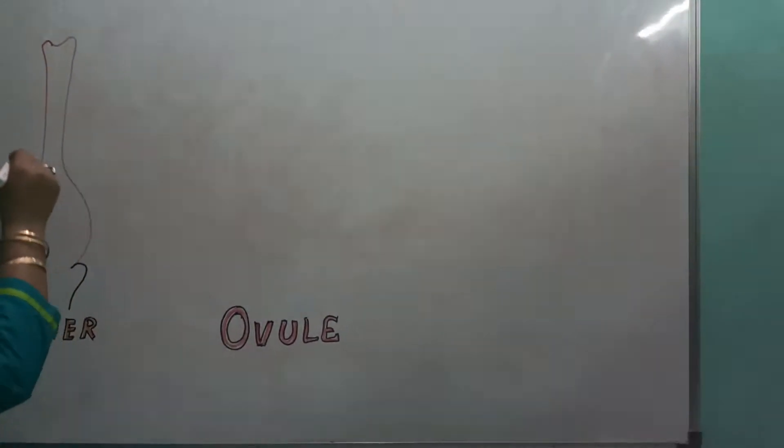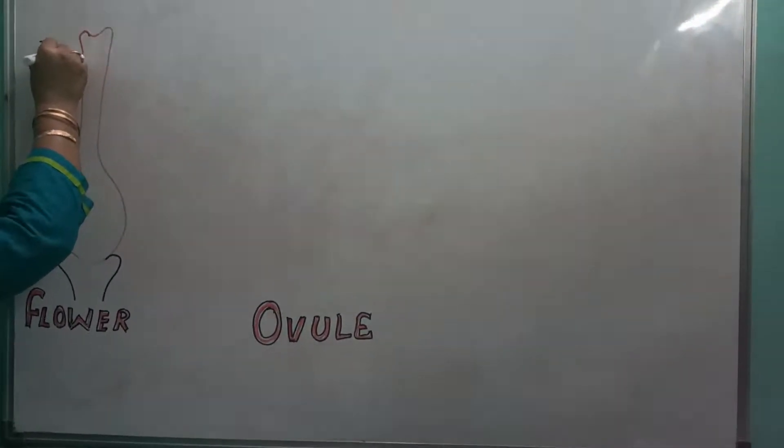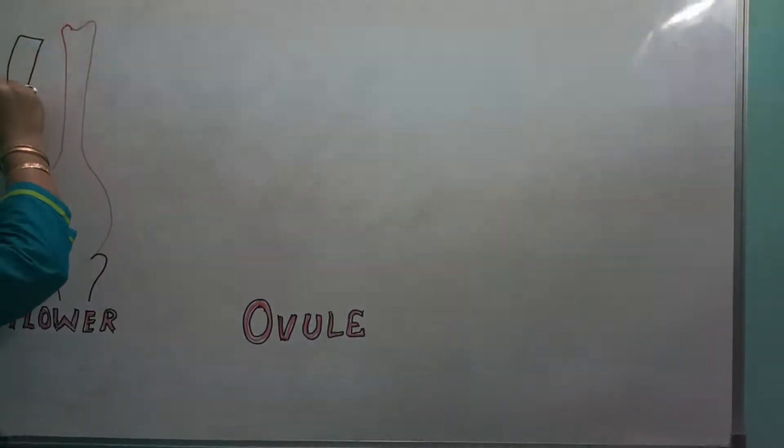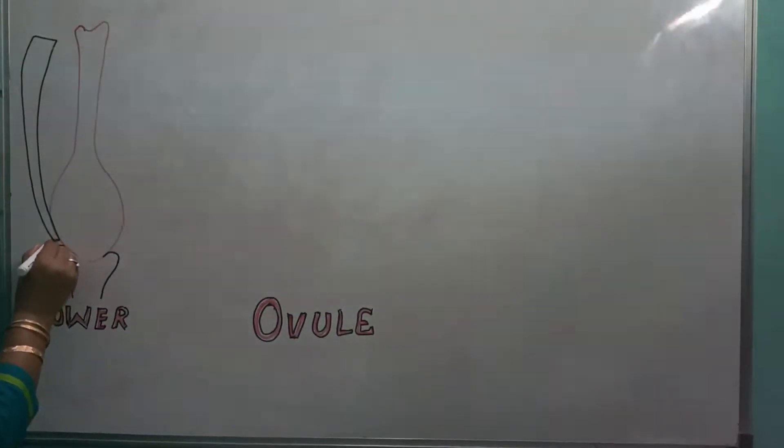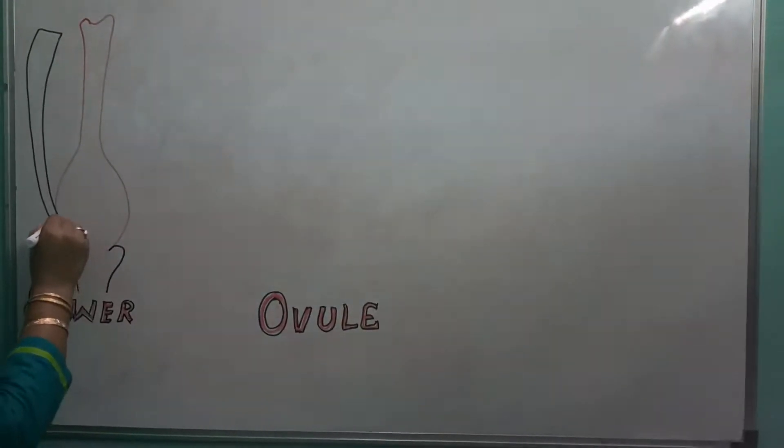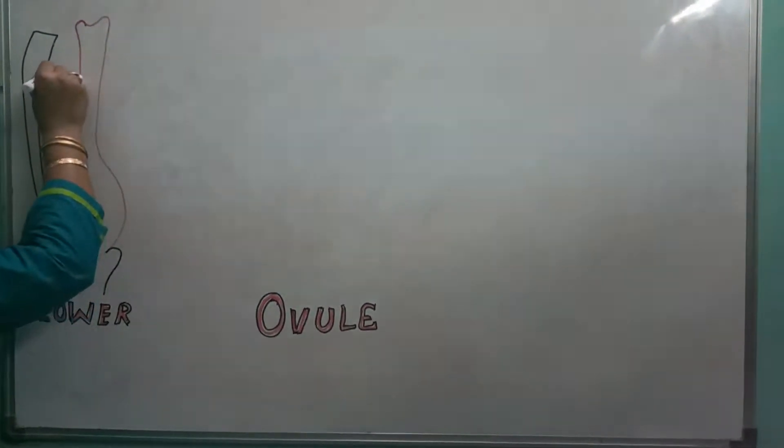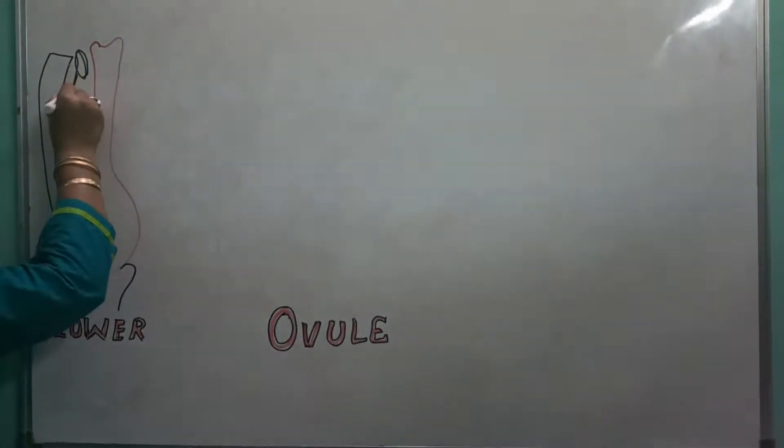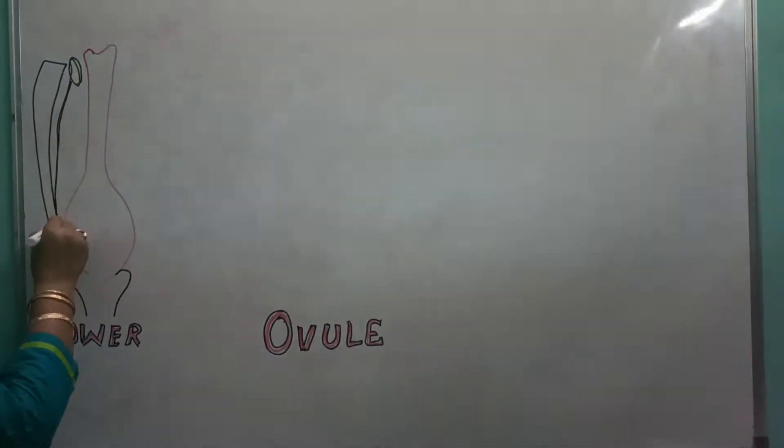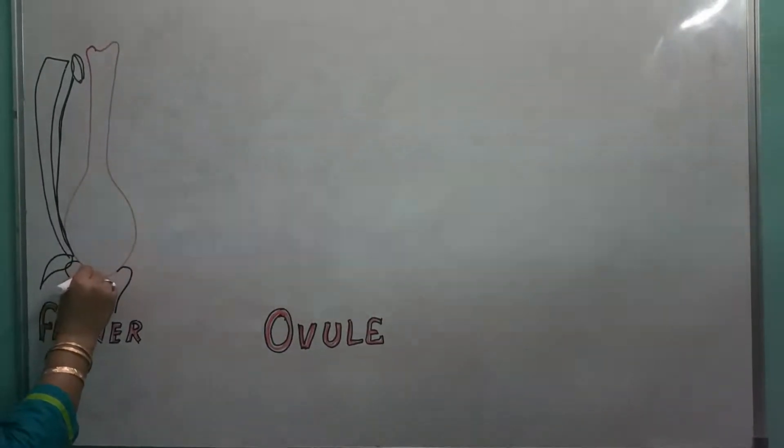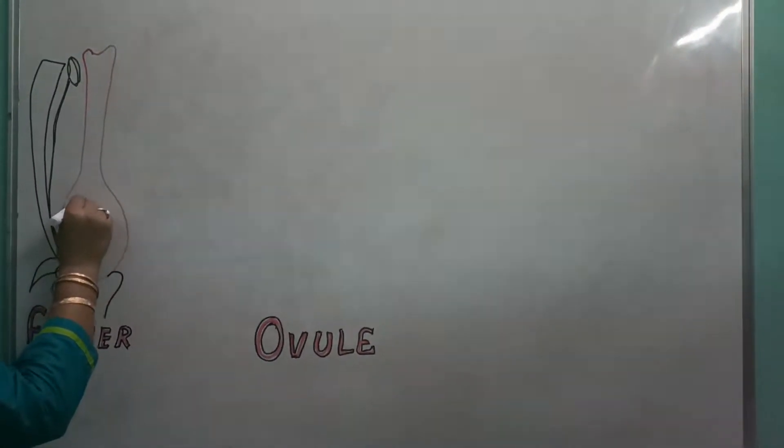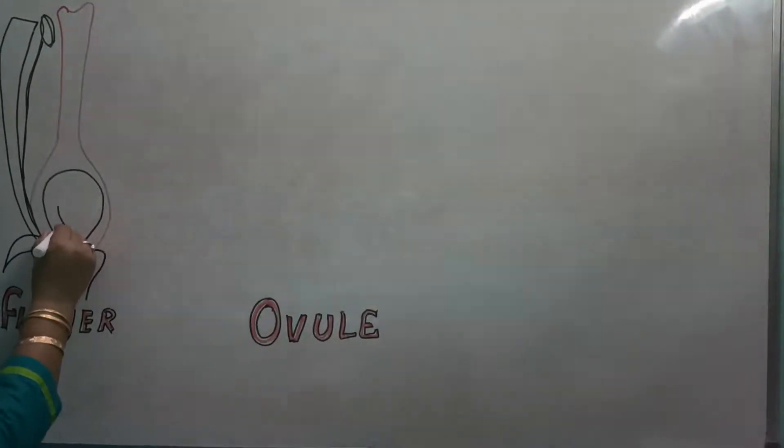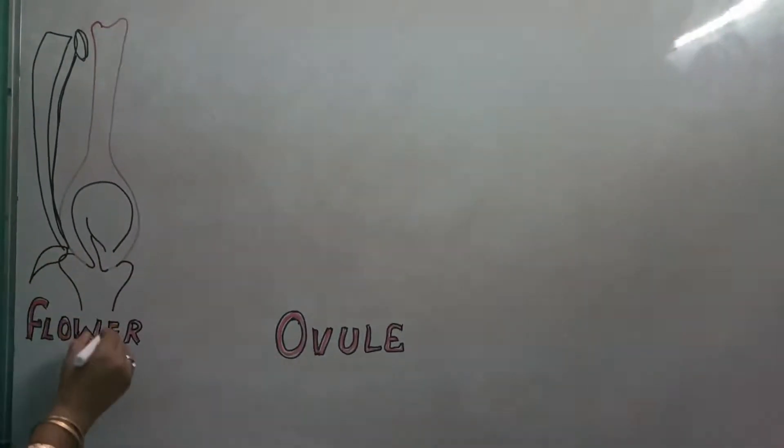And now towards this side, this one is to be termed as corolla, that means the petal, then followed by a calyx. Of course, one gynoecium like this. This one is filament showing you like this one. And inside the ovary, there is ovule. So this is the ovule which is present inside the ovary. And we will study the structure of this one.